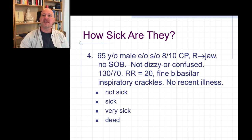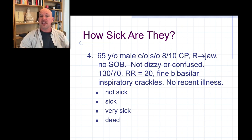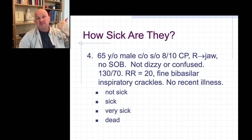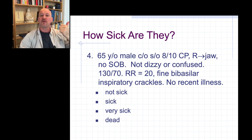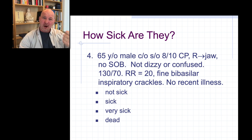Case 3: 65-year-old male with sudden onset 8 out of 10 chest pain radiating to the jaw. No shortness of breath, not dizzy, not confused, 130 over 70, respiratory rate of 20, fine bibasilar inspiratory crackles, no recent illness. 8 out of 10 chest pain — heart: not good. Not dizzy or confused — brain okay right now. 130 over 70 — perfusion okay right now. Respiratory rate of 20 with fine bibasilar inspiratory crackles — lungs are not okay. No recent illness — not worried about infection. Heart and lungs involved: very sick.